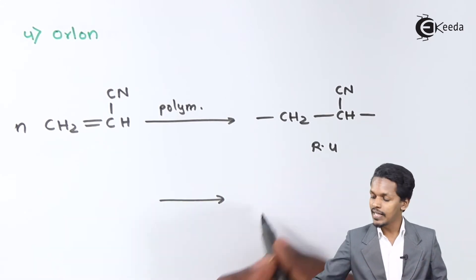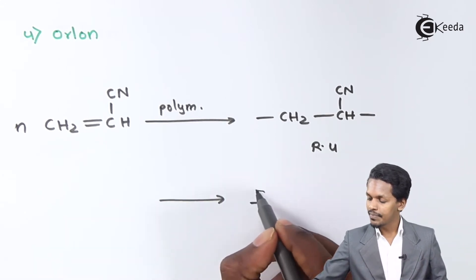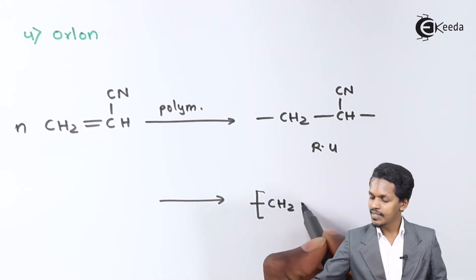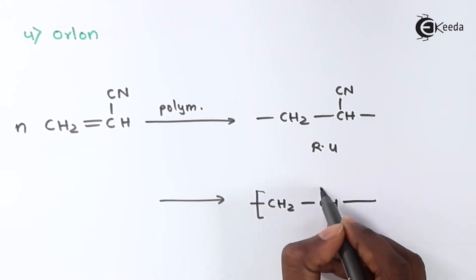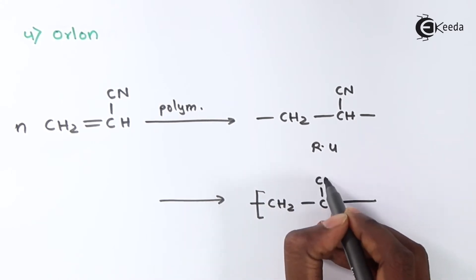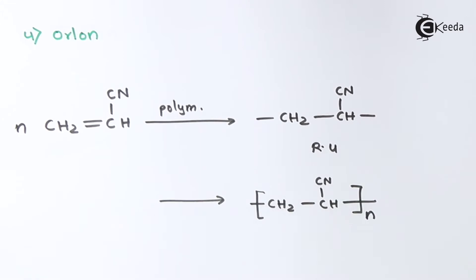The combination of all the repeating units gives –CH2–CH(CN)– repeated n times, and that is nothing but Orlon or PAN. This demonstrates how derivatives of ethene or alkenes combine through an addition reaction to form addition polymers.